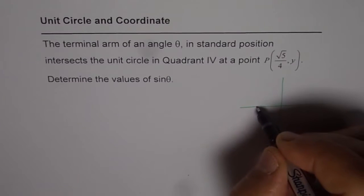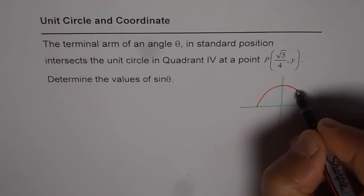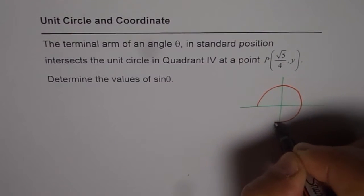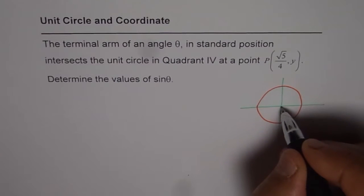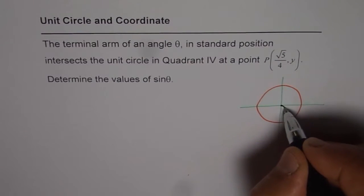So our primary objective is to find what y is. I am starting with a unit circle. When we say we have a unit circle it means that the radius is 1. So this is a unit circle.